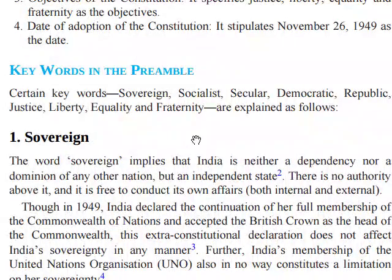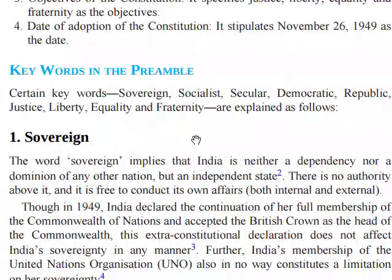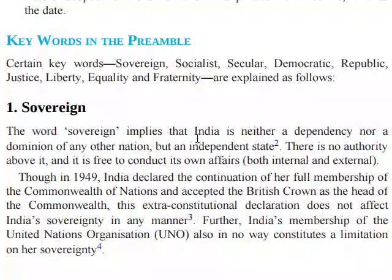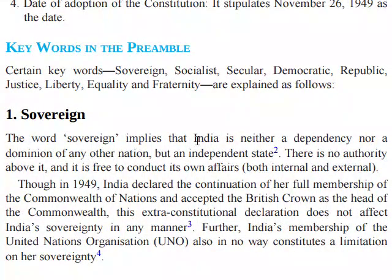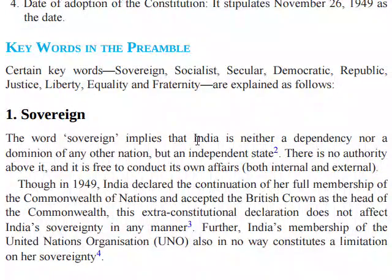Keywords in the Preamble: sovereign, socialist, secular, democratic, republic, justice, equality, fraternity. Sovereignty implies that India is neither a dependency nor a dominion of any other nation, but an independent state. There is no authority above it.